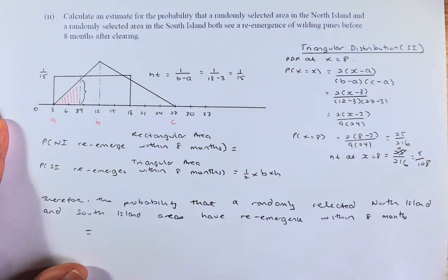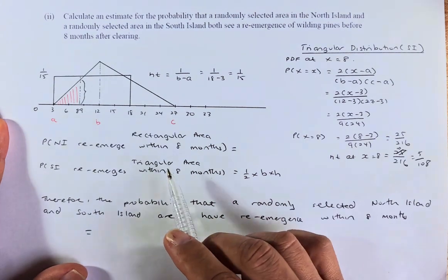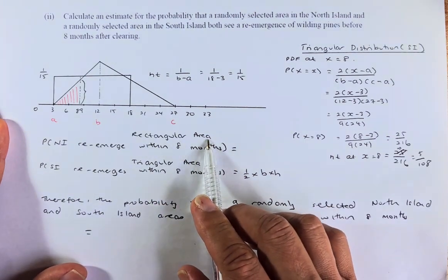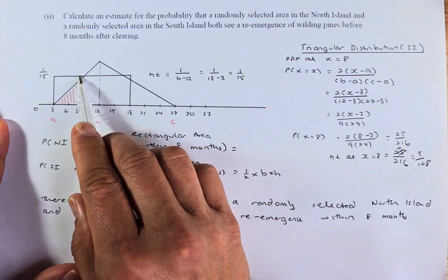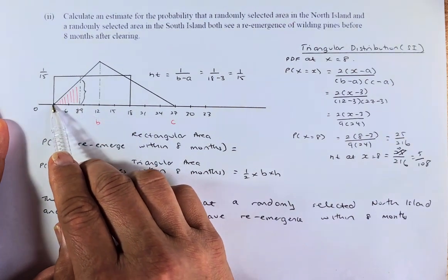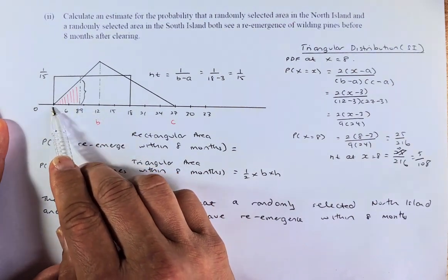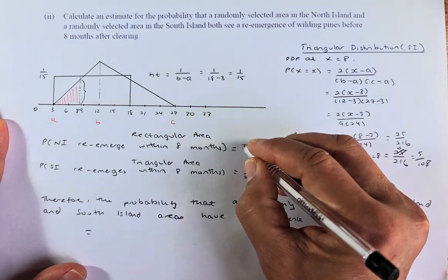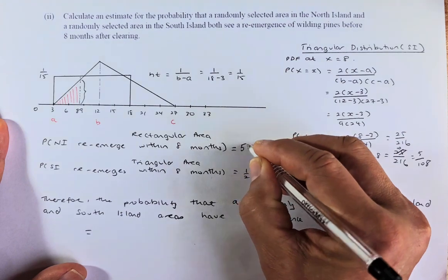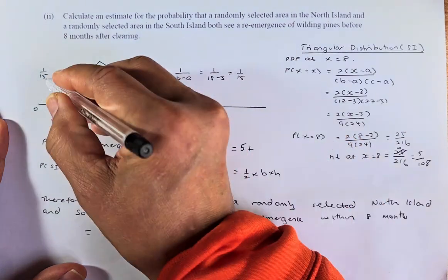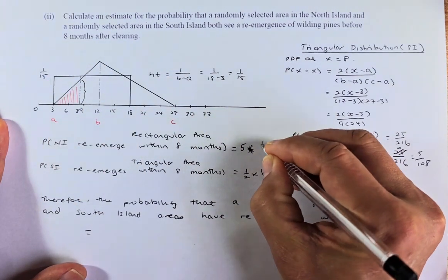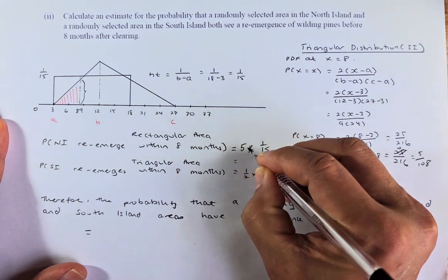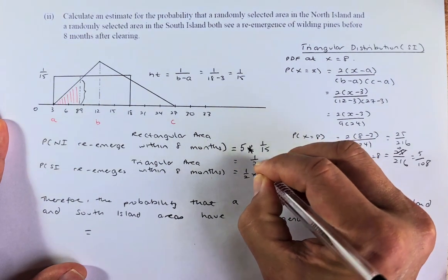We're going to calculate the probability of the North Island re-emerging within 8 months using the rectangular distribution. We're going to calculate this area: the base is going to be 3 to 8, so it's 5, and the height is 1 over 15. Multiplying, the answer is 1 over 3. So that is the answer for the re-emergence of the pine trees within 8 months for the North Island.